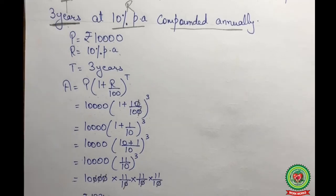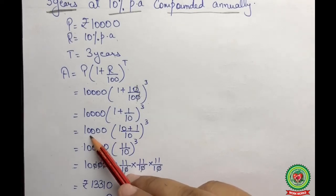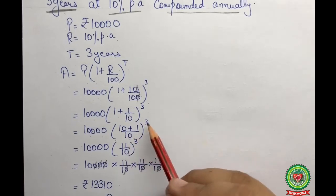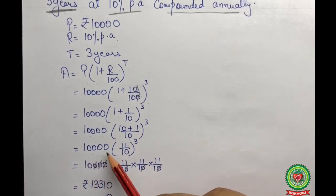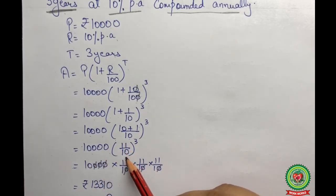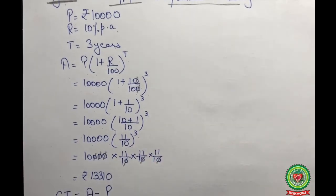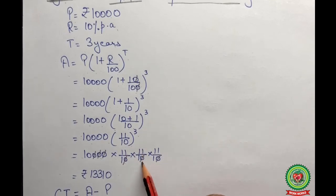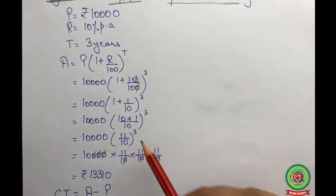We solve the bracket first by taking the LCM, which is 10, giving us: 10,000 × (10 + 1)/10, raised to the power of 3. Since 10 + 1 = 11, this becomes: 10,000 × (11/10)³. We expand this as: 10,000 × (11/10) × (11/10) × (11/10), writing 11/10 three times because the power is 3.